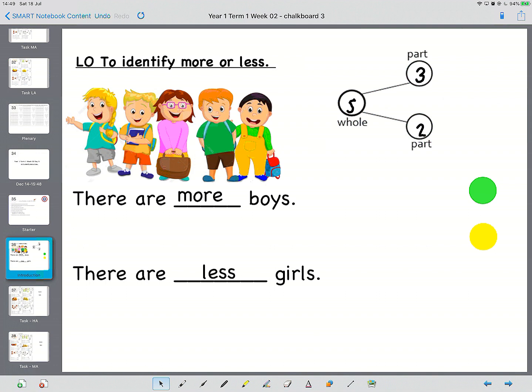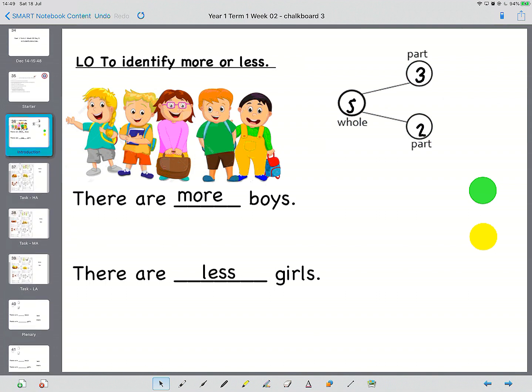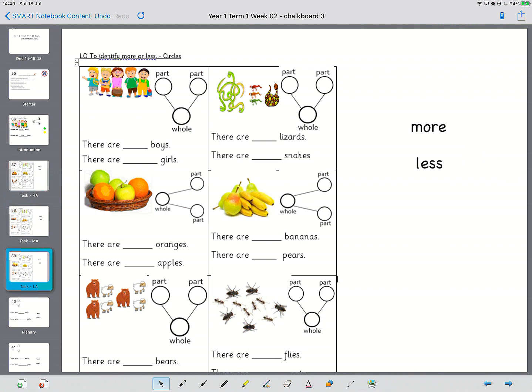Okay, and that is again today's task. It's exactly the same sheet but the difference is today, use the part-part-whole to count up the people but then decide whether it's more or less that goes in each of those boxes.